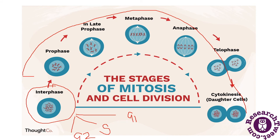In late prophase and into metaphase, spindle fibers align all the chromosomes in a single line. Metaphase is an extremely dynamic part of the cell cycle — spindle fibers rapidly assemble and disassemble as they grow out. Each chromosome has a specialized structure called a kinetochore, located at the centromere, which attaches to the spindle fibers.